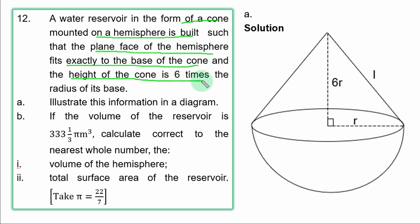Part a of the question illustrates this information in a diagram. Part b: If the volume of the reservoir is 333 and 1/3 π cubic meters, calculate correct to the nearest whole number...